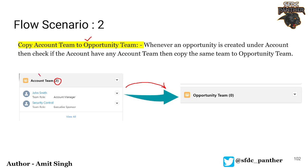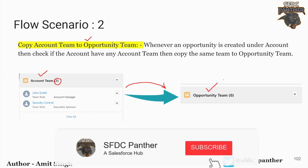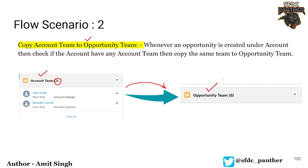For a detailed explanation of what opportunity teams and account teams are, I have created a separate video — the link will be in the description. At a high level, teams are used to share a record with particular users. For example, if you have an opportunity and want to work with your colleague or sales manager to close it, you can add that person as an opportunity team member and you both can work on the same opportunity to close it faster. Similarly, for account team — if you have a company called XYZ, multiple people in your organization may be contacting people at that company.